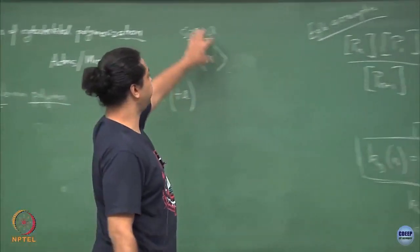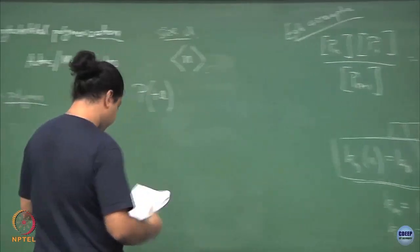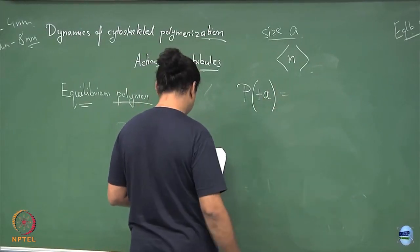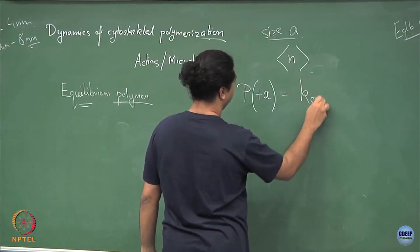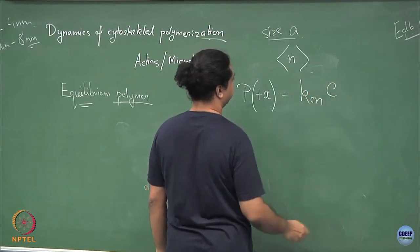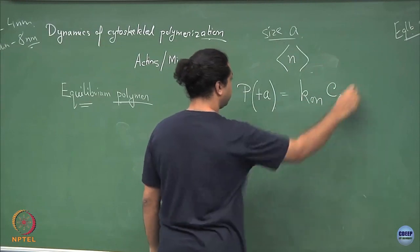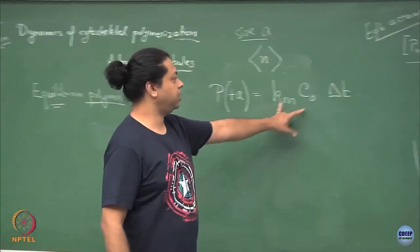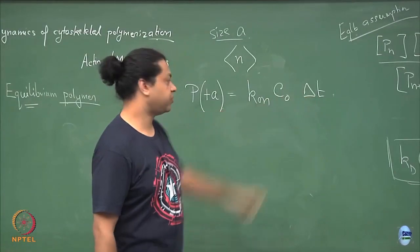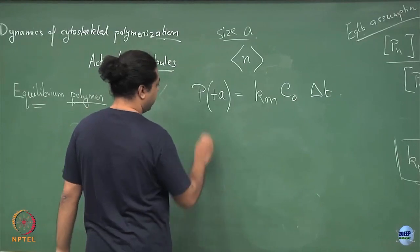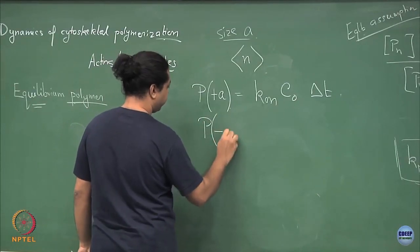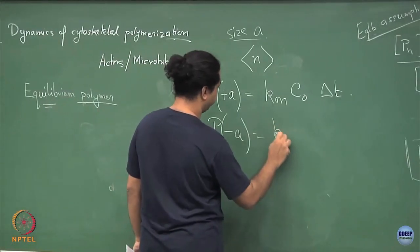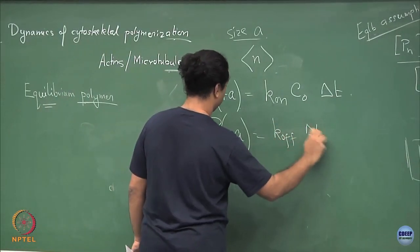Whenever you add a subunit you increase your length by a. The probability of increasing my length by a is my on-rate: k_on times the monomer concentration c_naught times delta_t. The rate is k_on, the probability is k_on times delta_t times c_naught. And the probability of losing an element and therefore shrinking your length by a is simply k_off times delta_t.